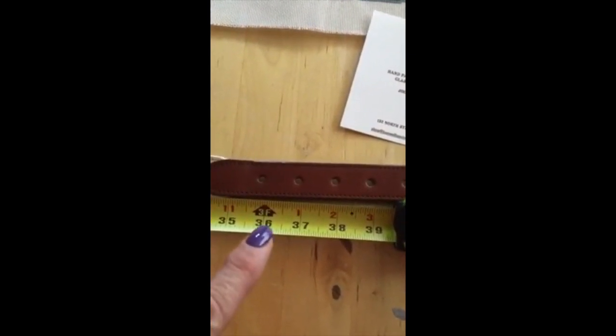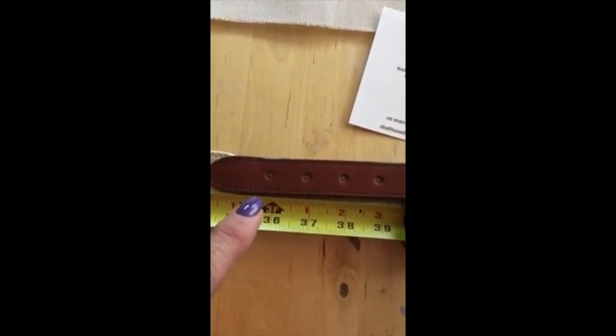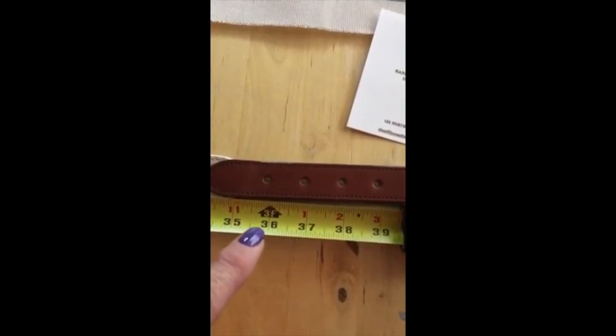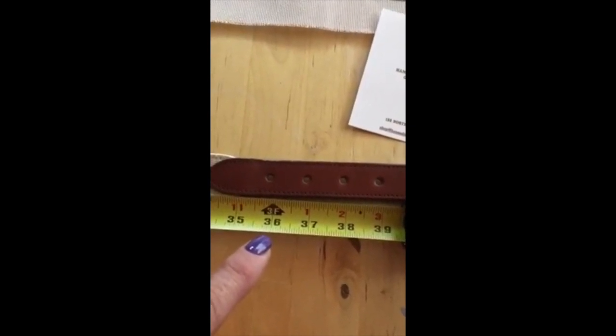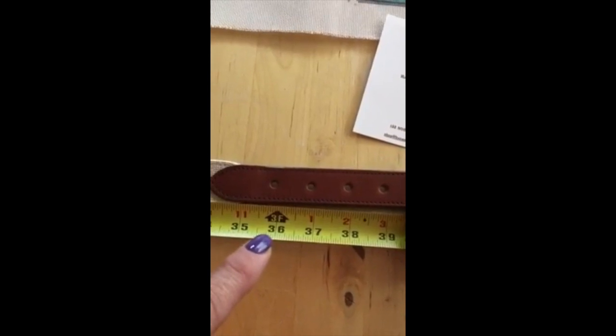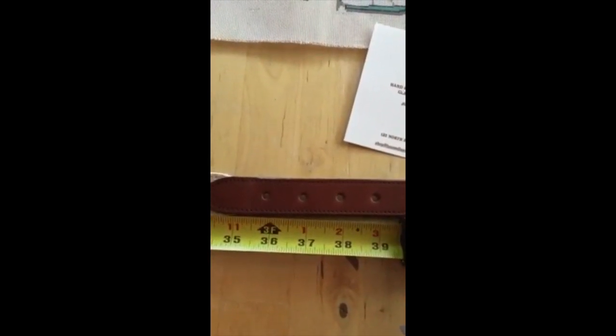If let's say the hole that the person uses the most is the very first hole, then for this belt, we would know that we need to tell the finisher it needs to be a 36. And that 36 will be the middle hole on the finished belt.